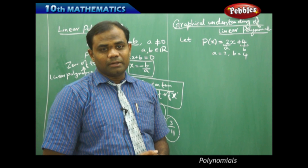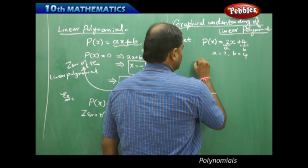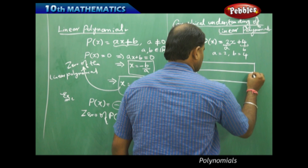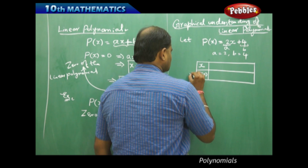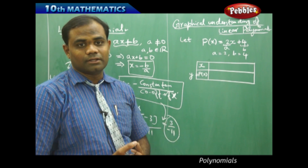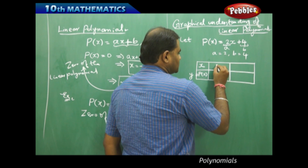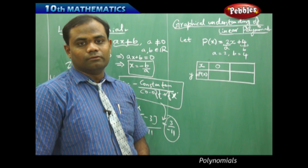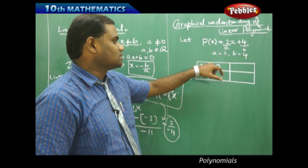To understand this graphically, let me draw a table taking different values of x and y. I take x and P of x, which I generally denote with y. In the x-y coordinate plane, y is generally denoted for P of x. In the linear form, I first substitute x equal to 0 to find the corresponding value of y.